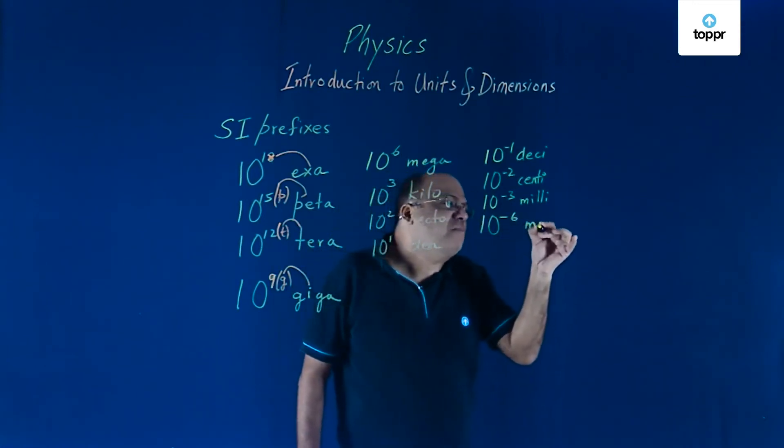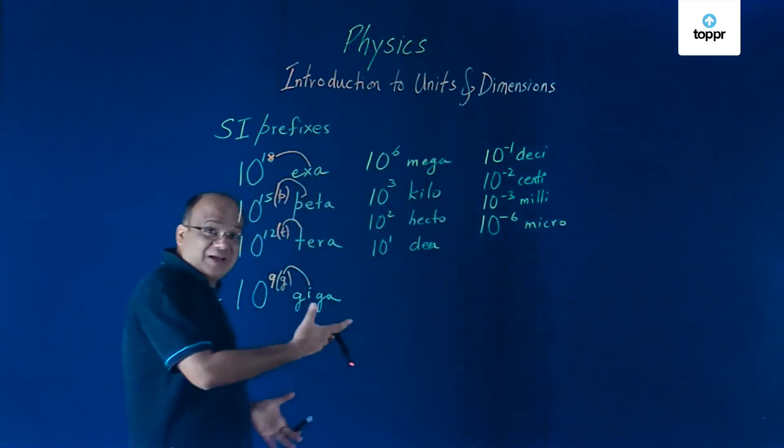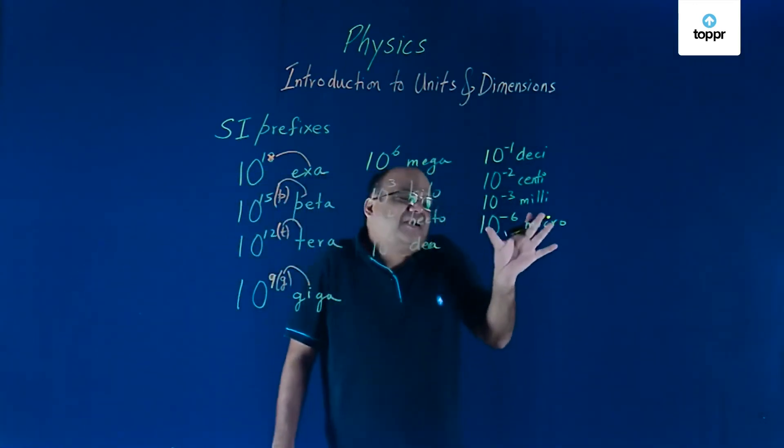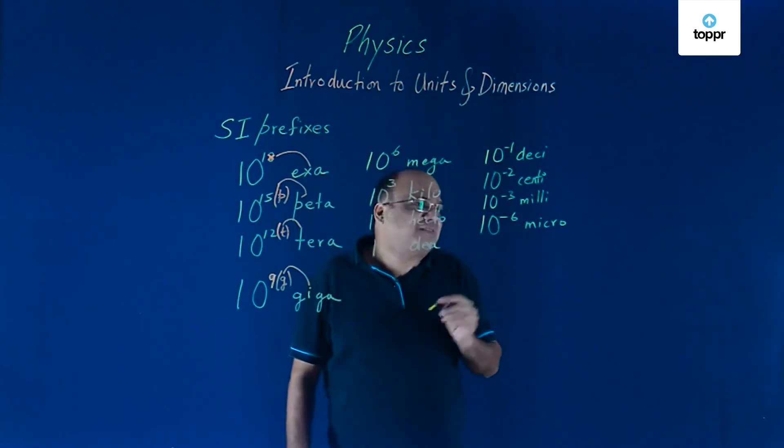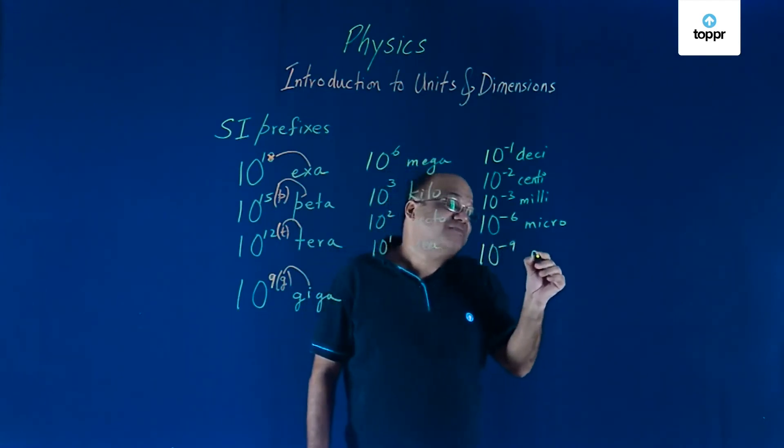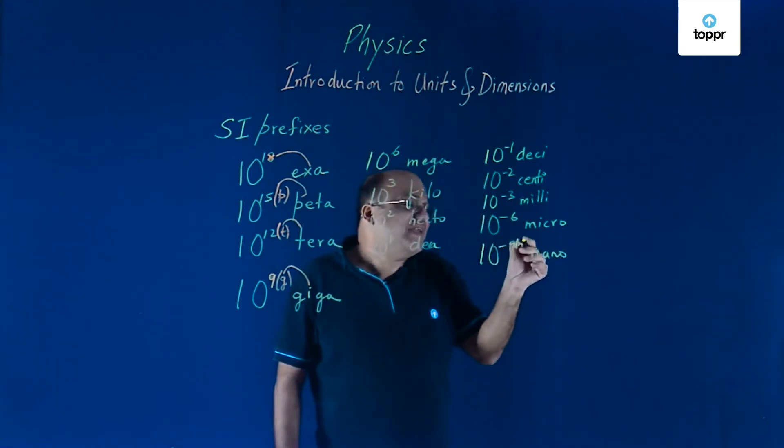Minus 6, micro. Microelectronics is a branch of engineering. Micro you should know, at power minus 6. Minus 9, 9 starts with N, that should remind us of nano, nano car, right? Minus 9, N, nano.